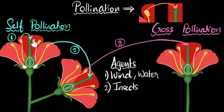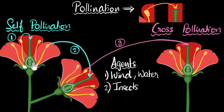Pollination has happened, but that's not the end of the story — it's actually the beginning. The sperms inside the pollen grains still need to travel all the way to the eggs, which are found in the ovaries. That is something we'll talk about in a future video.